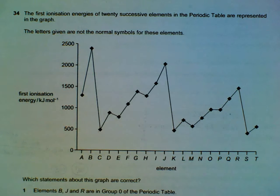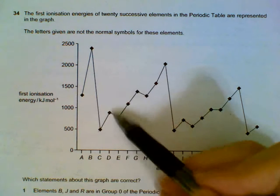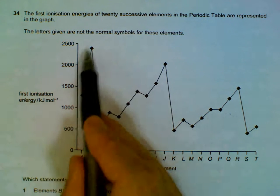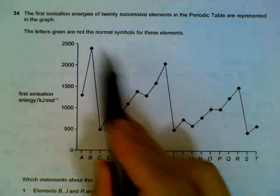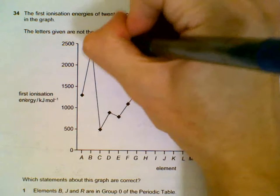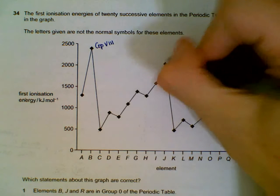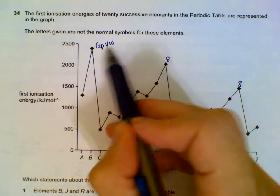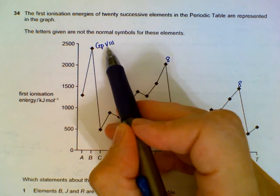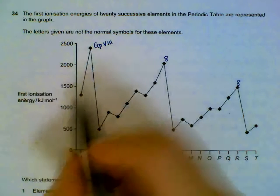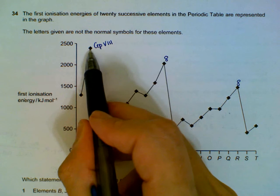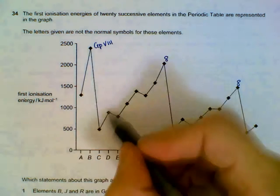Question 34 is about the first ionization energy of 20 consecutive elements. The trick here is if you realize that they're labeled as first ionization energy, the peaks will be Group 8. If it's second ionization energy, the peaks will be Group 7, but for first, the peaks will be Group 8.